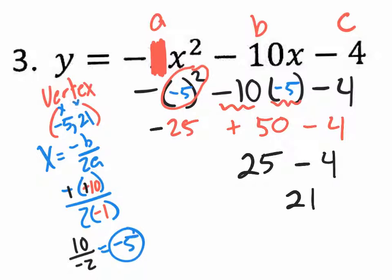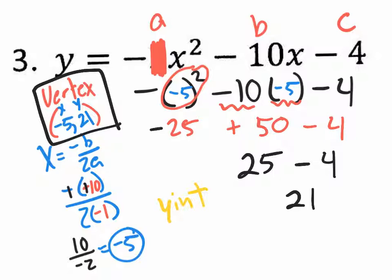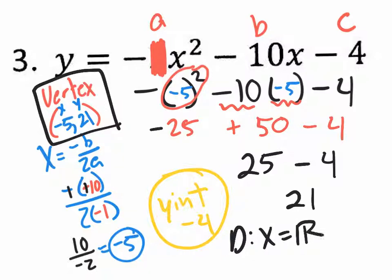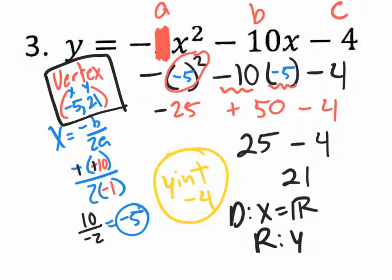So the vertex is at negative 5, positive 21. That's all the paper asked for, but let's take it a step further. The y-intercept: where would it cross the y-axis? The c value is negative 4, so the y-intercept is negative 4. The domain: x equals all real numbers. The range: this parabola opens down because it's negative, so y is less than or equal to the vertex y value, which is 21. So the range is y is less than or equal to 21. We've stated so much about this parabola without even having it graphed.